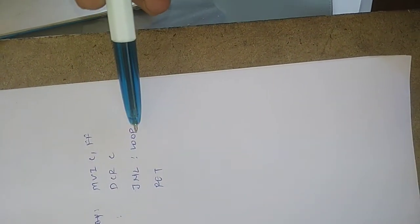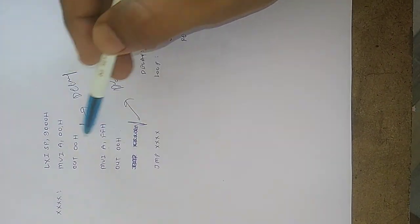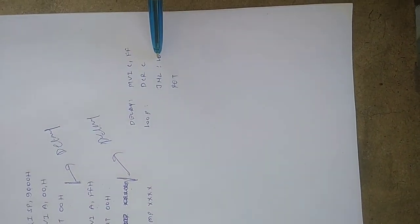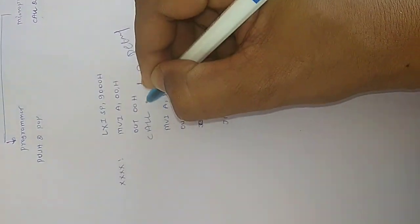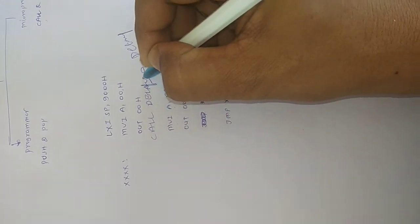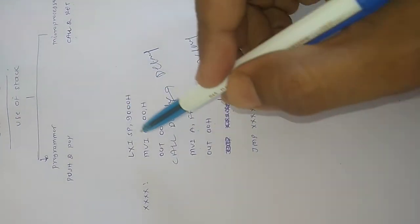I have written the delay subroutine separately from the main program: MVI C, FFh; DCR C; JNZ to the loop label; and finally RET (return). This is my delay subroutine written apart from the main program. This delay subroutine will be called into the main program whenever needed using the CALL instruction — for example, writing CALL followed by DELAY.